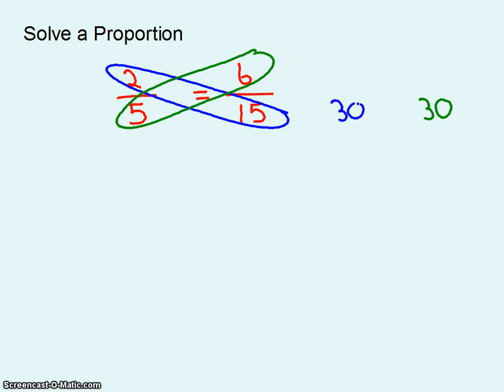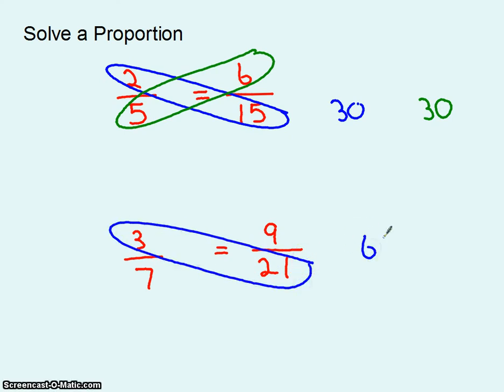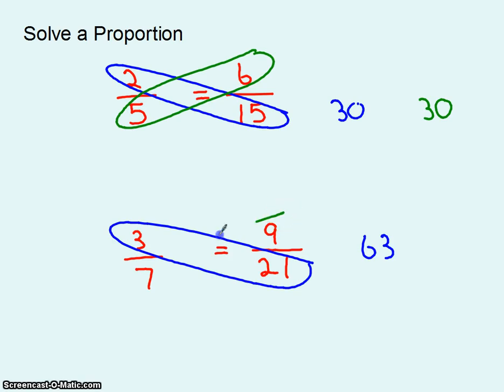Let's look at another set of fractions that are equal to each other. How about 3 sevenths and how about 9 twenty-firsts. Well let's do the same thing. Let's multiply across this way and we get 63. If I multiply across this way, I lost my screen. There we go. If I multiply across this way, I also get 63.